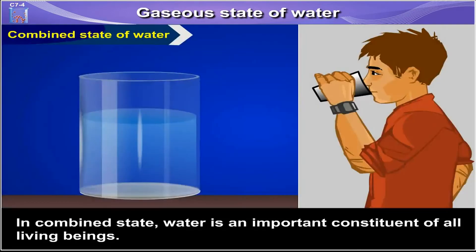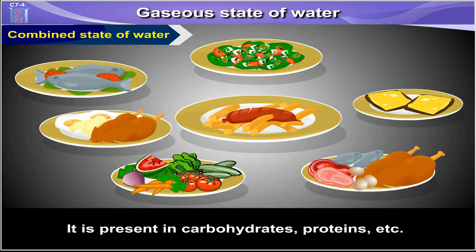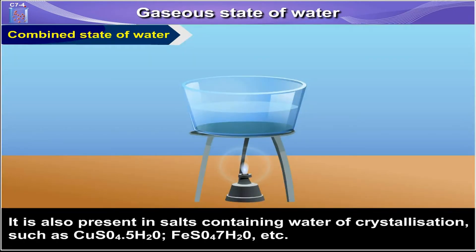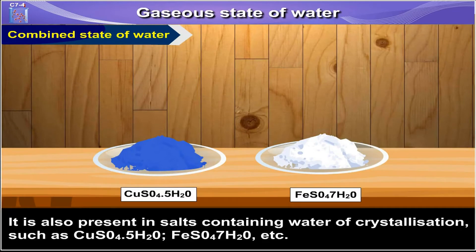Combined state of water. In combined state, water is an important constituent of all living beings. It is present in carbohydrates, proteins, etc. It is also present in salts containing water of crystallization such as CuSO₄·5H₂O, FeSO₄·7H₂O, etc.